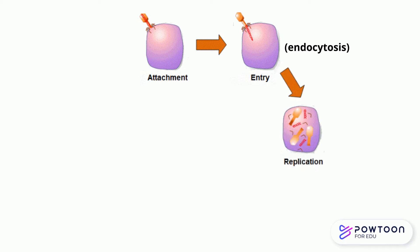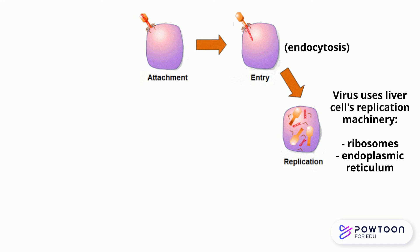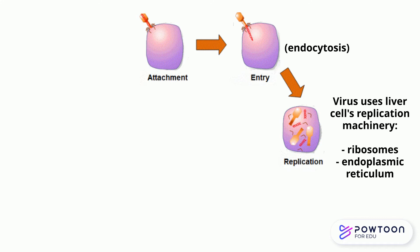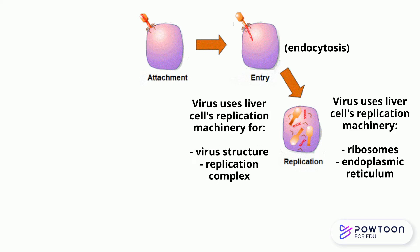The viral RNA then uses the liver cell's replication machinery, including ribosomes, to make its proteins. These proteins are used by the virus for structure or for creating the replication complex. The replication complex, which is part of the liver cell's endoplasmic reticulum, is what helps the virus make more copies of its genetic information.